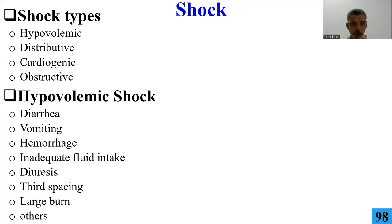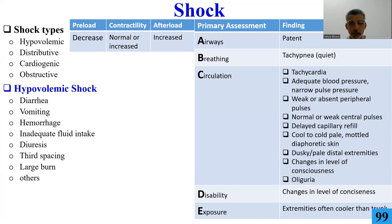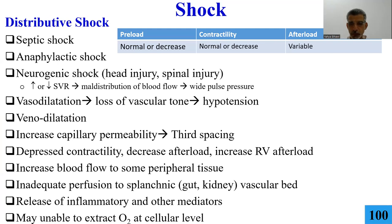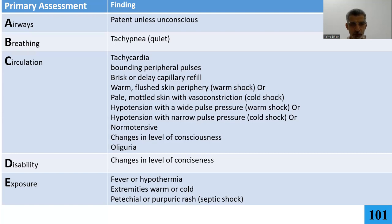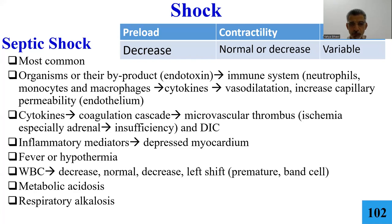Management of hypovolemic shock follows the same ABCDE approach — airway, breathing, circulation, disability, exposure. Distributive shock is due to peripheral vasodilation — causes include neurogenic shock, anaphylaxis, or septic shock, also called warm shock. Again, management is ABCDE. Septic shock can be peripheral/warm or combined with cardiac dysfunction. Anaphylaxis and septic shock can coexist.